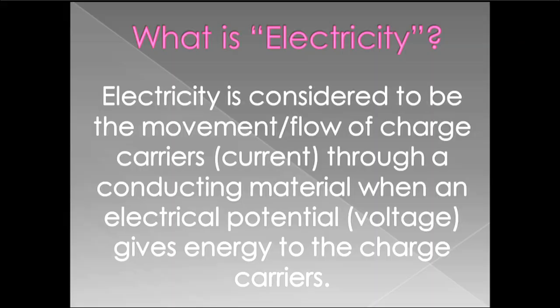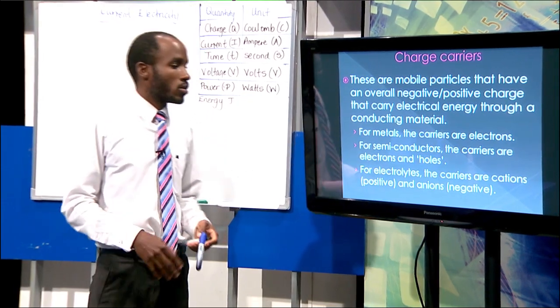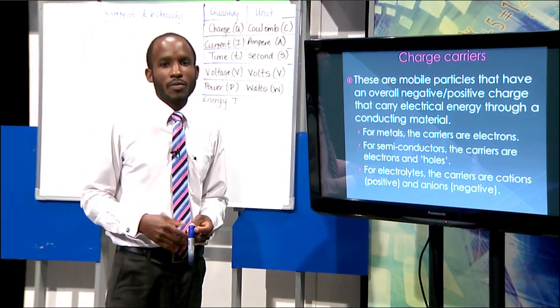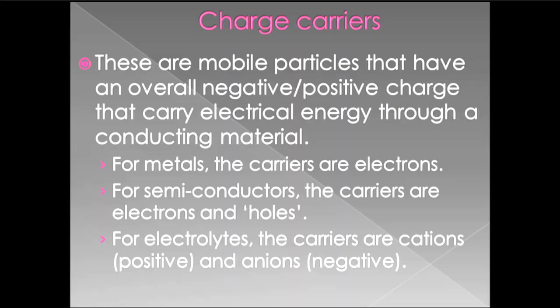With regards to what the charge carriers are: charge carriers are mobile particles that have an overall negative or positive charge that carries electrical energy through a conducting material. In layman's terms, particles are either negative or positive, and they carry the energy from the source to the load through the conducting material. There are three categories: metals, where charge carriers are electrons — the negative charge.